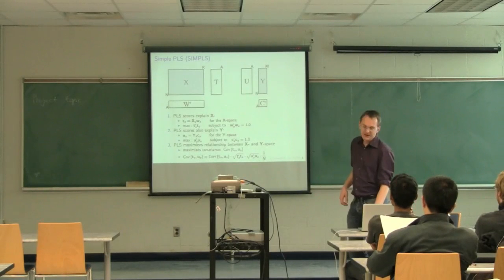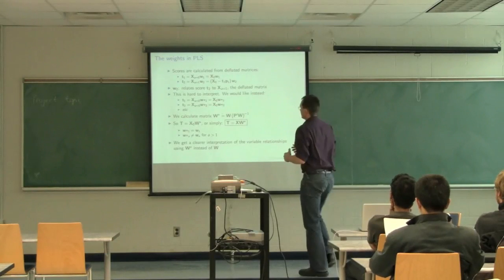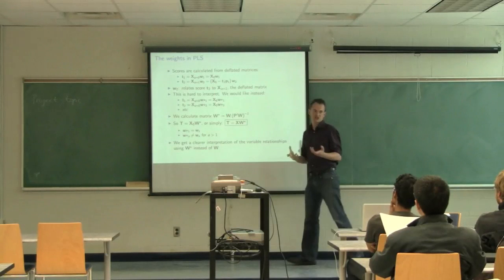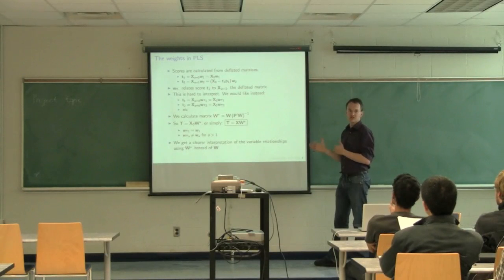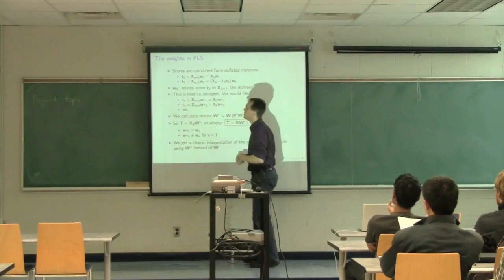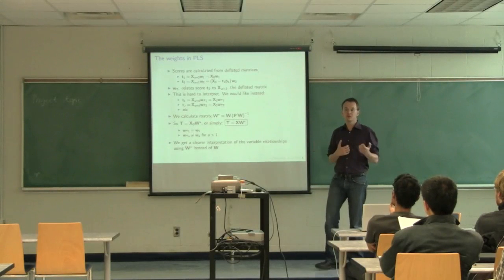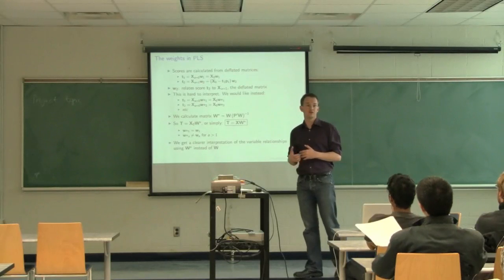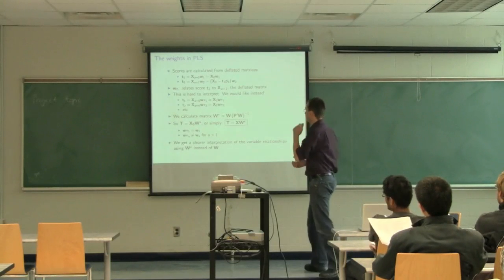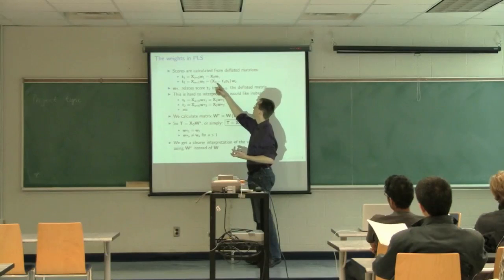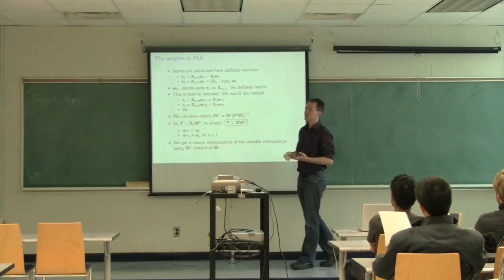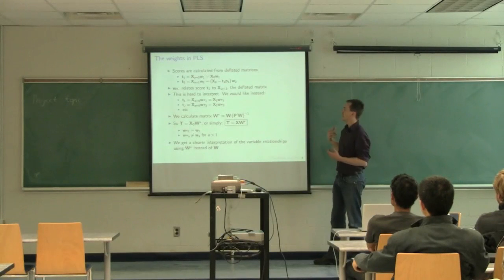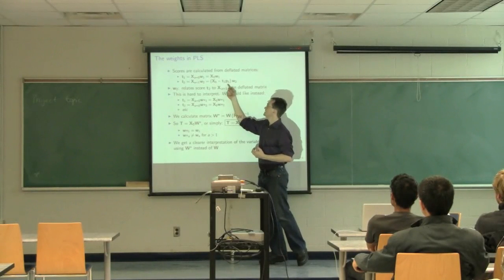The way to explain the difference between W and W-star is fairly straightforward. In the first component we get our scores T by multiplying X with W — that's the standard projection. We're projecting our X matrix onto direction vector W and getting those distances in the score vector T. But then we deflate: we remove from X the part we've just explained with those scores. We subtract from X the term T times P1-transpose, where T times P1 is a matrix the same size as X that captures the part explained by the first component. This residual — X0 minus T1·P1-transpose — we call X1.